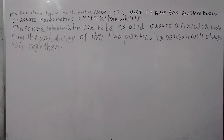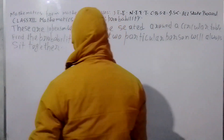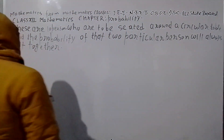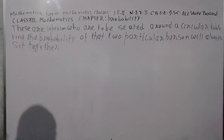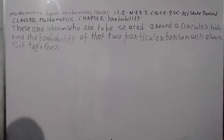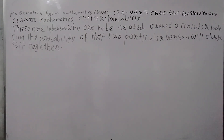When there are 10 persons who are to be seated around a circular table, find the probability that two particular persons will always sit together.